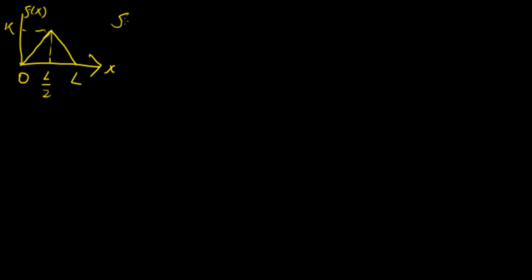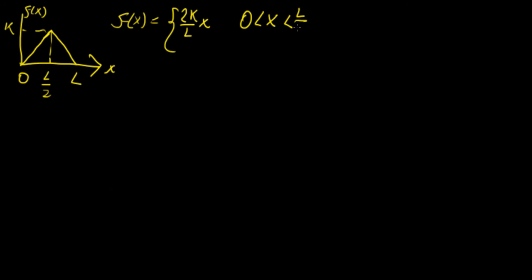Mathematically we write this as: f(x) = (2k/L)x for x between 0 and L/2, and f(x) = (2k/L)(L − x) for x between L/2 and L.